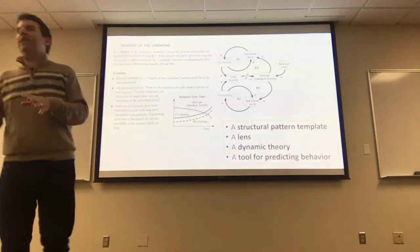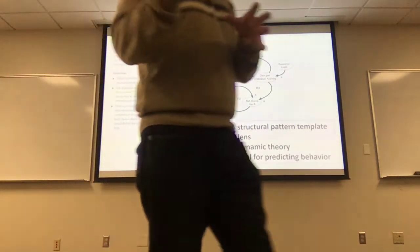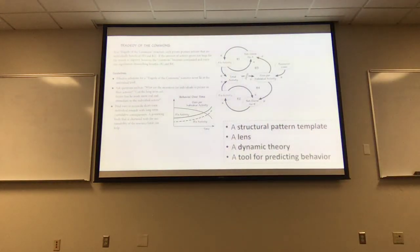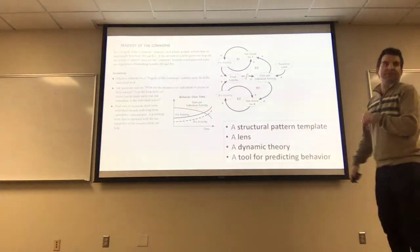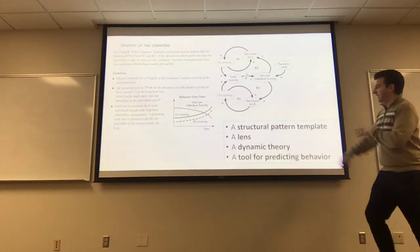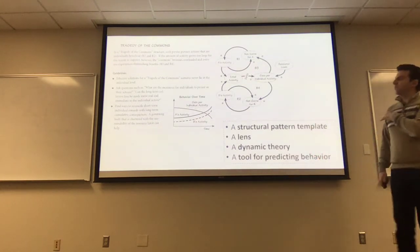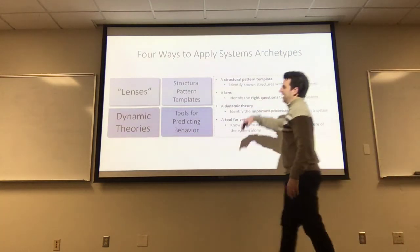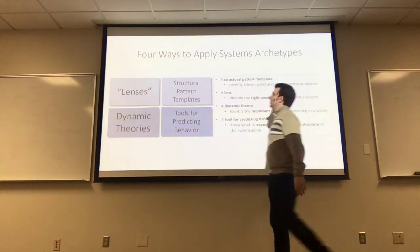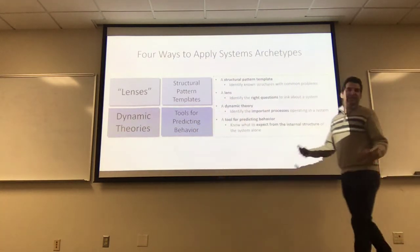That's what Kim and Landon were trying to say in their paper — these causal loop diagrams and archetypes are meant to be used in multiple ways to give us a handle on complicated problems. So that's what we're going to talk about today: four different ways of looking at the system — lenses, structural pattern templates, dynamic theories, and tools for predicting behavior.